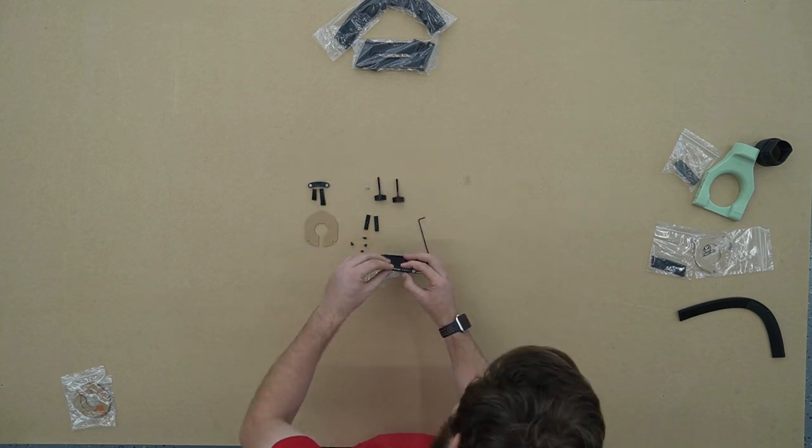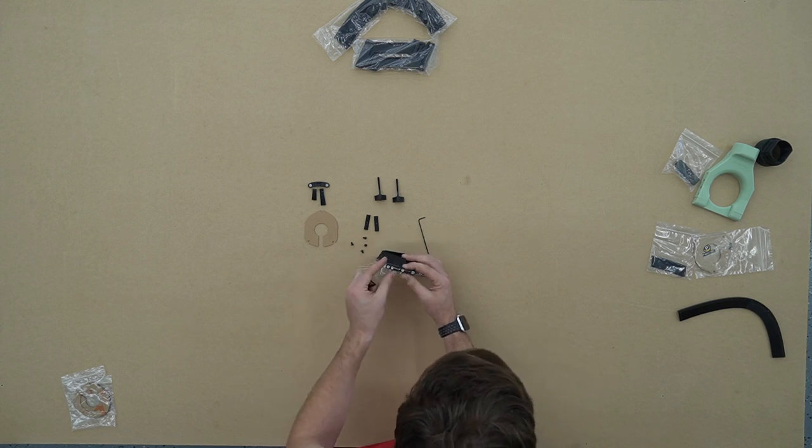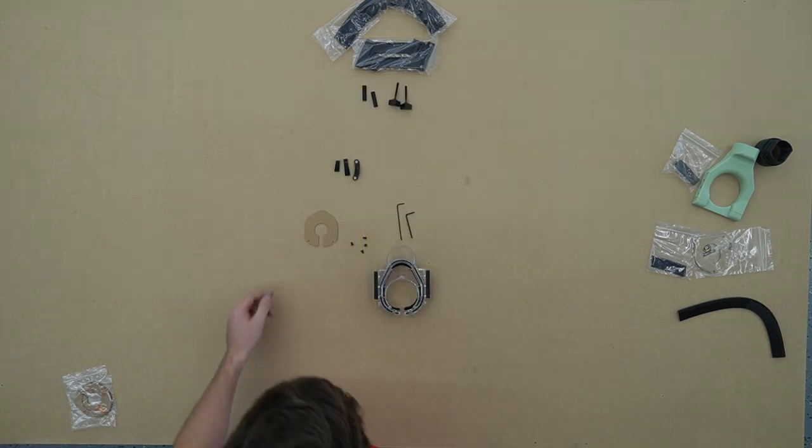Now we're going to flip it over and do the same thing on the other side. These should be left slightly loose so you can adjust the position of your Dust Boot relative to the router.